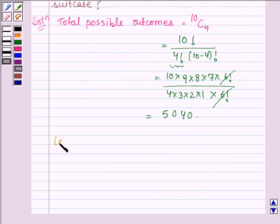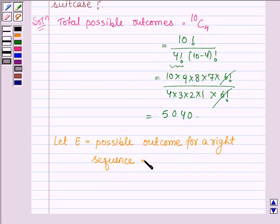Now, let us denote E as the possible outcome for a right sequence. And this is equal to 1.